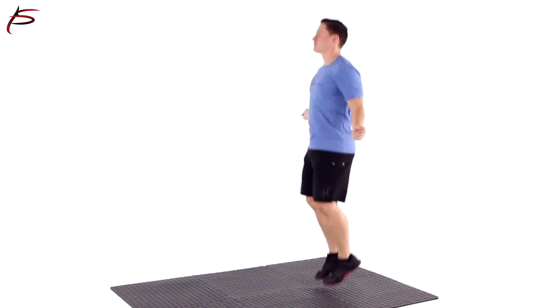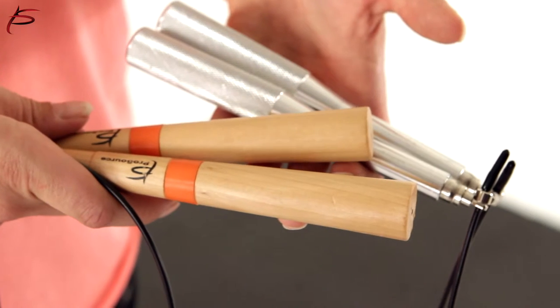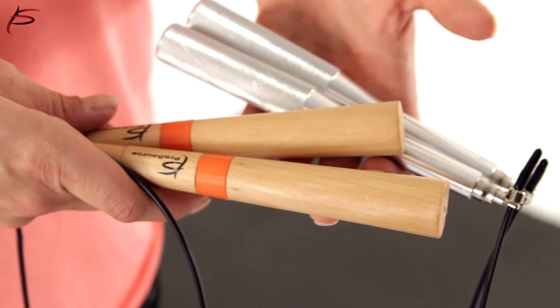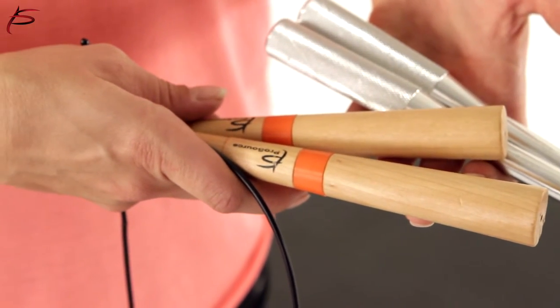ProSource exercise jump ropes with wooden or aluminum handles are designed with high-quality, durable wire cable to last a lifetime.